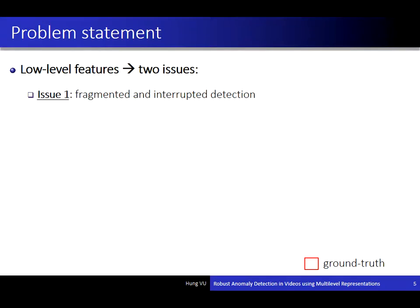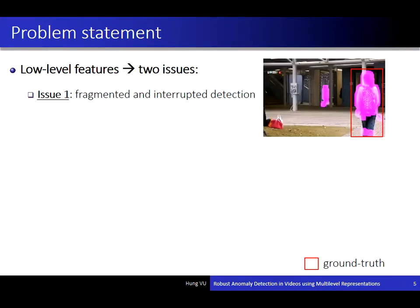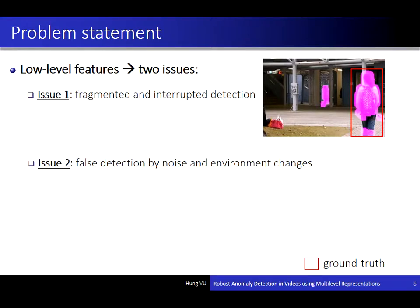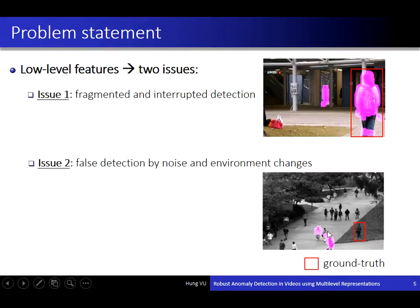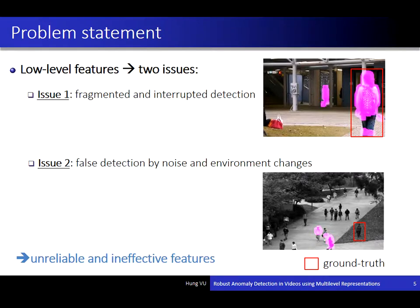In the first issue, they usually produce fragmented and interrupted detections. Like in this example, the anomaly here is clear, but the detection result is fragmented into the top path and the bottom path. The second problem is that this method has many false detections due to noise and environment changes. Like in this figure, the detection result has two false detections. So low-level features are unreliable and ineffective.